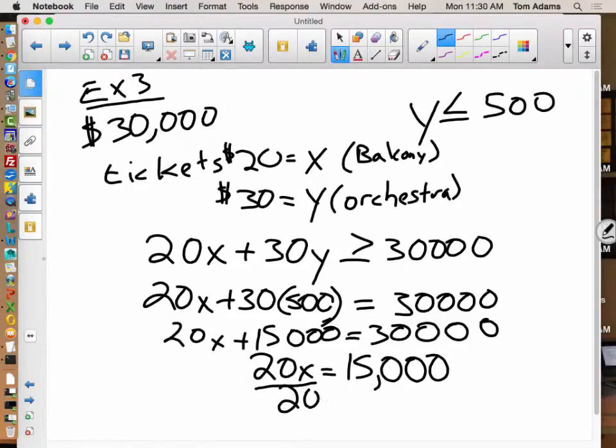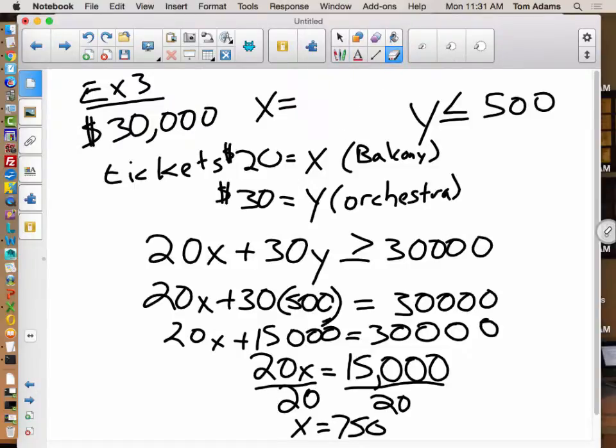And so I divide both sides by 20. So somebody get a calculator out and tell me what that is. That would be 20 times 5 times 3. It would be 750. Is it 750? Yep. I knew it. Plus the magnitude of 10. So X equals 750. Now what that's saying is, when X equals 750, in order to get my 30,000 on the dot, at 500 orchestra seats, to get 30,000.